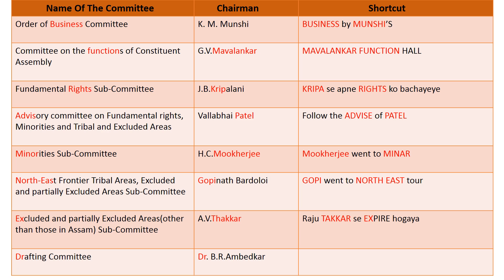The next committee is the Committee on the Functions of the Constituent Assembly. Its chairman is G.V. Mavalankar. The shortcut is: remember the famous Mavalankar Function Hall in Delhi. 'Mavalankar' from chairman G.V. Mavalankar, and 'function' from the Committee on the Functions of the Constituent Assembly.